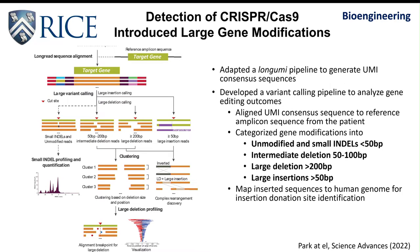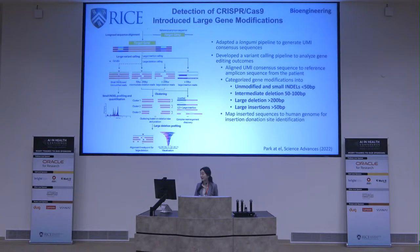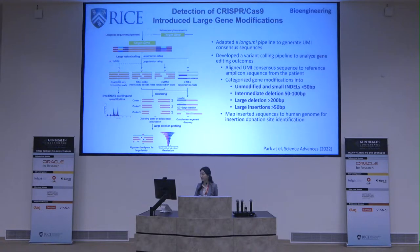We aligned UMI-consensus sequences to reference amplicon sequences from untreated patient samples and categorized gene editing outcomes into four categories: unmodified and small indels smaller than 50 base pairs; intermediate deletions between 50 and 100 base pairs; large deletions larger than 200 base pairs; and large insertions larger than 50 base pairs. For large insertions, we mapped inserted sequences to the human genome to identify the insertion-donating site.